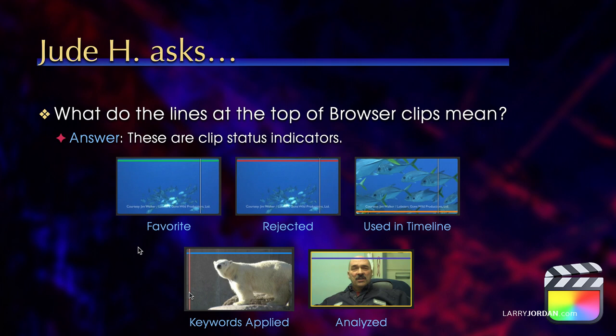A gold bar at the bottom indicates a clip that is currently used in the active timeline. If you have multiple projects inside a single Final Cut library, only the project which is active and open in the timeline will display gold bars. If it's a pale blue bar, it means that we've applied keywords — in this case, polar bear or mammal. And if it's a purple bar, it means that we've analyzed it in terms of color and in terms of people: is it a two-shot, a wide shot, a close-up? As soon as that analysis is done, the purple bar appears.